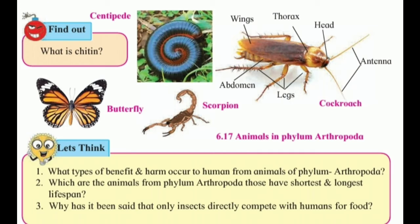These animals are found in all types of habitats, ranging from the deepest ocean to the highest mountains. The body of these animals is triploblastic, eucoelomate, bilaterally symmetrical, and segmented.